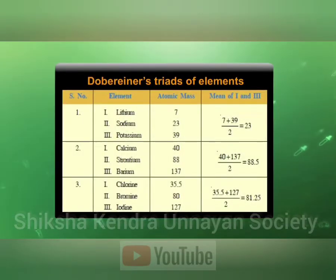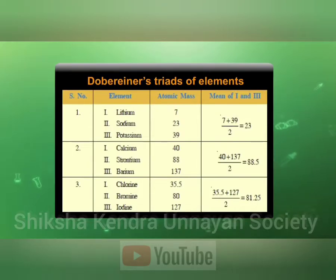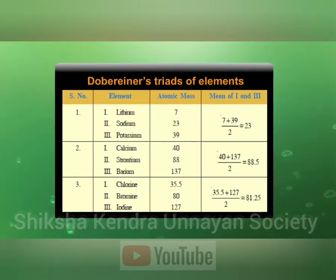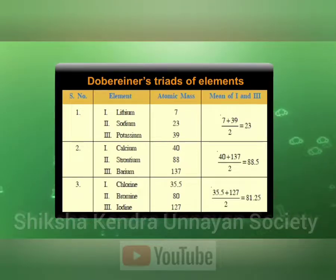This table shows the different triads formed by Dobereiner, which includes groups of three elements. It is also indicated that the atomic mass of the middle element is the arithmetic mean of the other two elements.